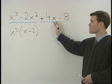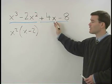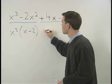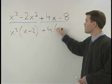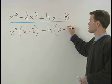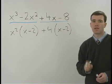The greatest common factor for positive 4x minus 8 is positive 4. That leaves you with x minus 2 also inside the parentheses.